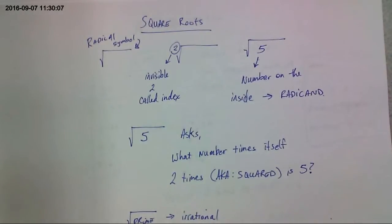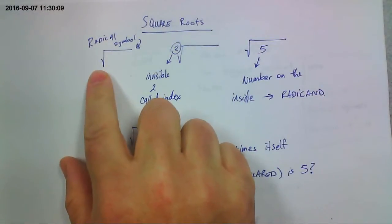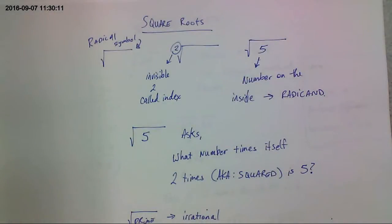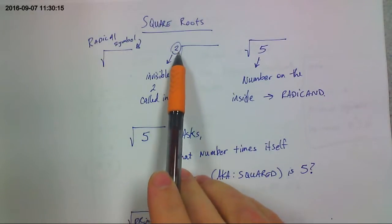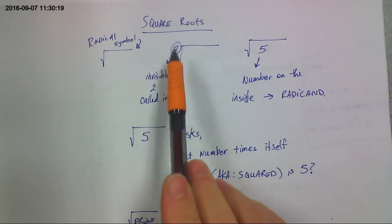So square roots. First thing you've got to know is that this thing's called a radical symbol. Second thing you've got to know is there's actually an invisible two written right there. See? We don't actually write the two. It's an invisible two right there. And that's important because when you do cube roots or other roots later, there will be a number there.